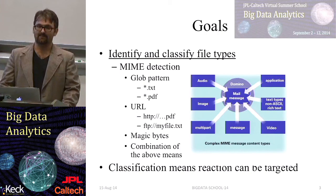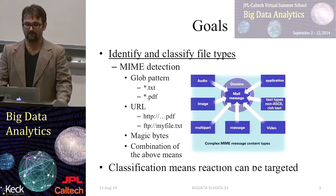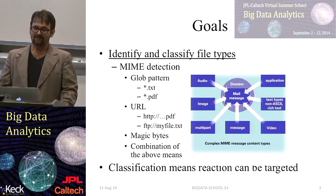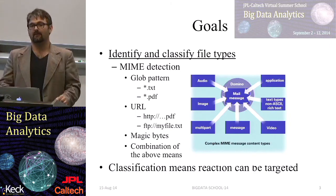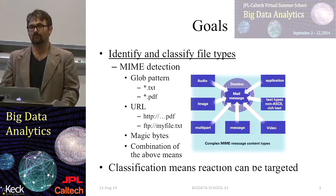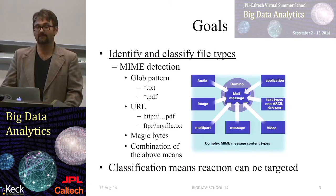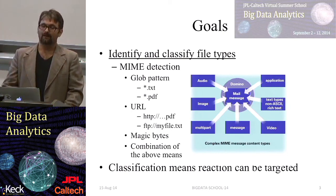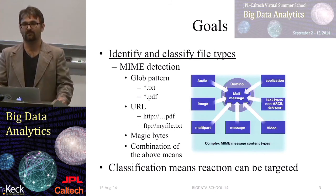They broke it down into initially a seven-category classification: audio, images, multi-part messages, video, text, application, and things like that — as you see in the diagram in terms of a mail message. After breaking it down that way, they defined a taxonomy with sub-leaves on these top-level types, eventually a tree that included around 1,200 canonical file and content types you see on the Internet today. 1,200 is a much more accurate estimate than simply looking at URL extensions. These are richly curated types with primary and sub-type hierarchical classifications.